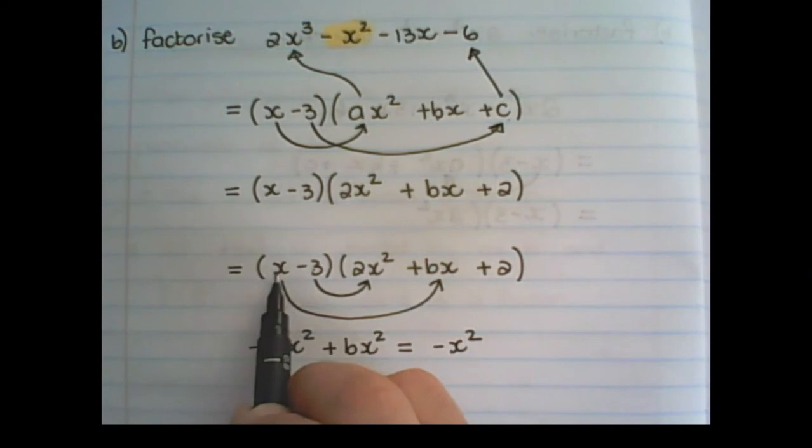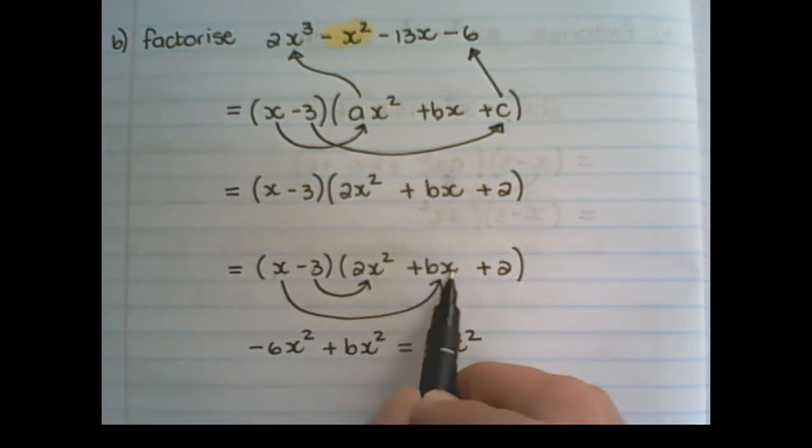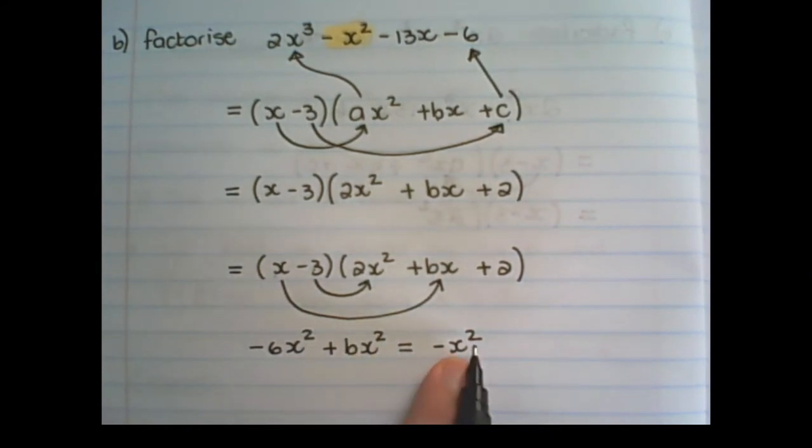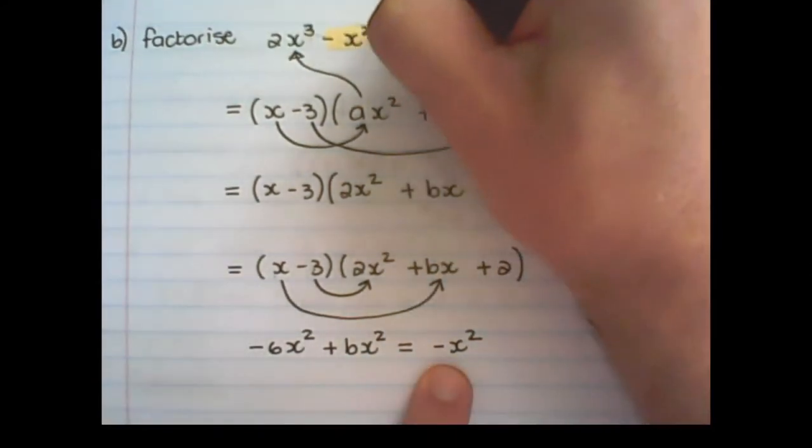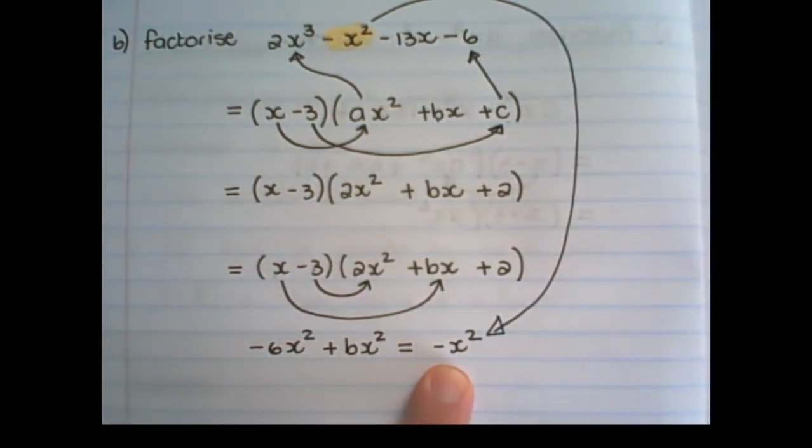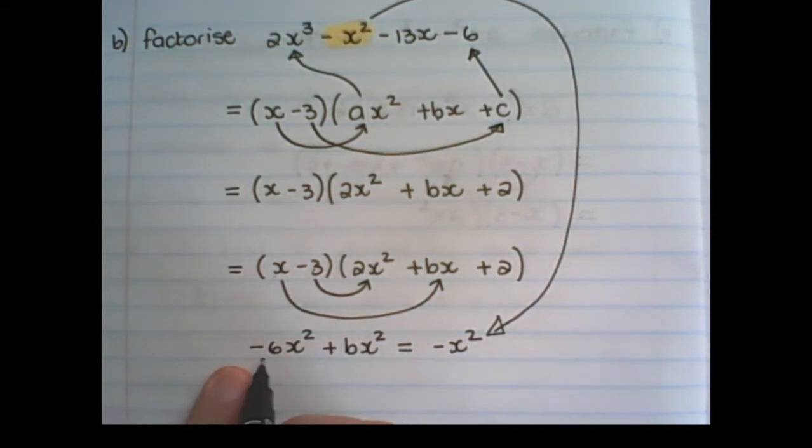It's the second term of the factor multiplied with the first term in the bracket, and the first term multiplied with the second term in the bracket in order to solve b. So I have created x squared expressions. This value comes from the original expression which I am trying to factorize. I can now divide everywhere by x squared. And I am left with negative 6 plus b equals negative 1. And then I can solve b.